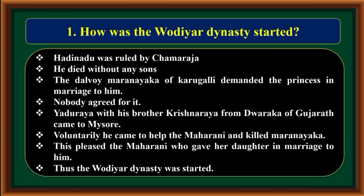Yaduraya, with his brother Krishnaraya from Dwaraka of Gujarat, came to Mysore. Voluntarily, he came to help the Maharani and killed Maranayaka. This pleased the Maharani, who gave a daughter in marriage to him. Thus the Vadiyar dynasty was started.